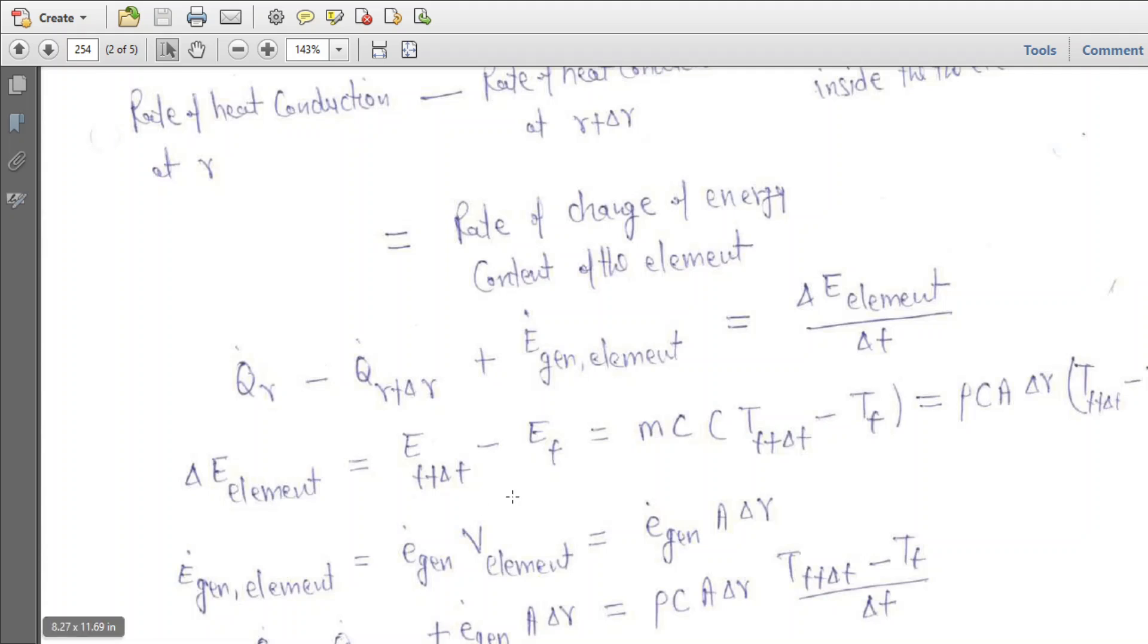Delta E of the element is given by mc_p times [T(t+Δt) minus T(t)], which equals ρc_p·A·ΔR times [T(t+Δt) minus T(t)].